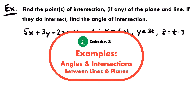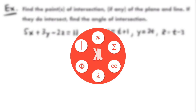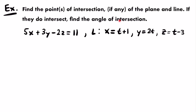Welcome back. Let's practice finding intersections involving lines and planes. Here's our first example. We want to find the point or points of intersection, if any, of the plane and line. If they do intersect, find the angle of intersection.